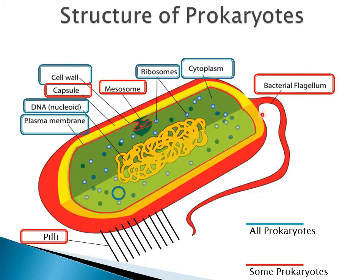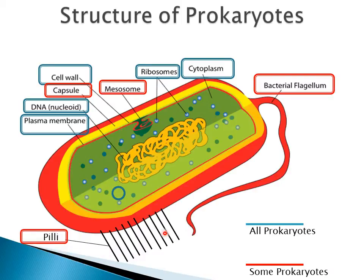The other structures that are not common to all prokaryotes are the bacterial flagellum, used for moving, as not all the bacteria and not all the prokaryotes are able to move. The mesosome, which is an invagination of the plasma membrane. The capsule in yellow color — this capsule adds to the virulence of the bacteria; most bacteria with capsules are unbeaten by antibiotics. And also we have the pili, which are hair-like structures used to attach to surfaces.